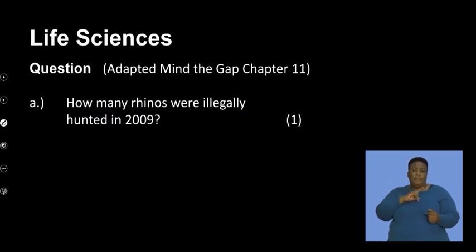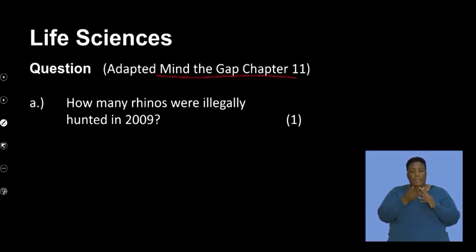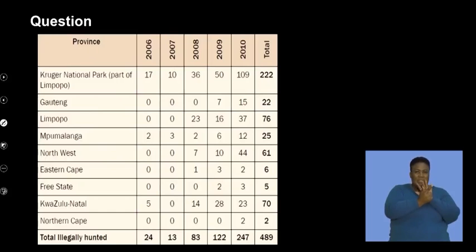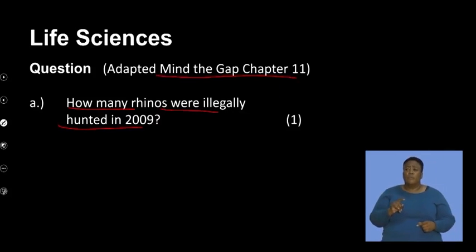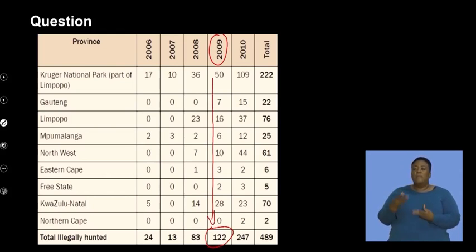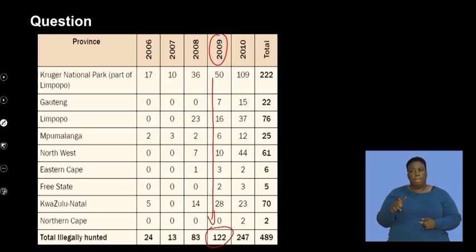The first question, adapted from Mind the Gap Chapter 11, refers to how many rhinos were illegally hunted in 2009. Looking at the table for that year, we can see that a total of 122 rhinos were illegally hunted in 2009. This is a question that requires you to read through a table and extrapolate information from it.